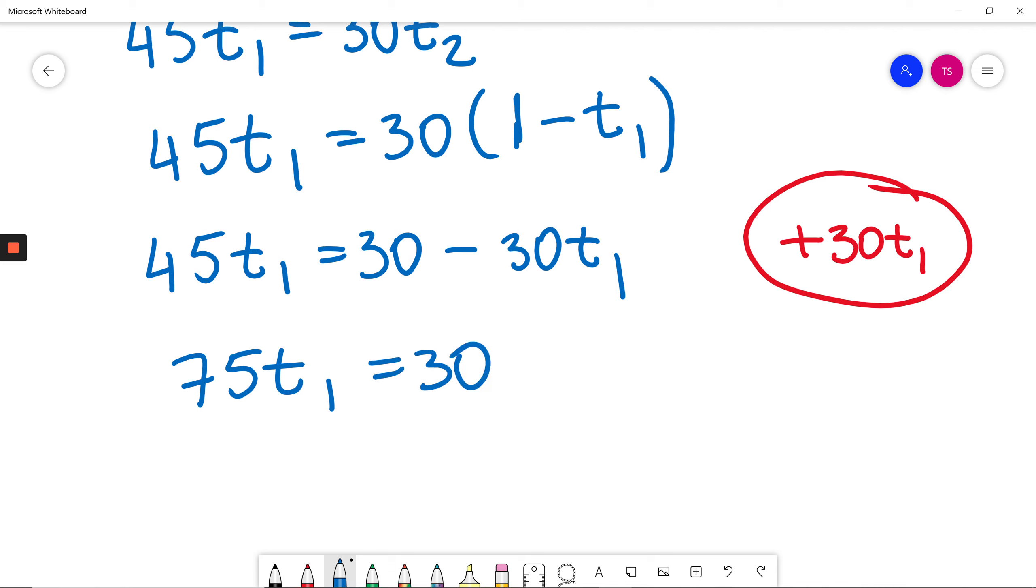and I will get 75 T1 will be equal to 30. At this moment, I will divide both sides by 75, so T1 will be equal to 30 divided by 75. I will simplify by 5. How many fives in 30? 6. How many fives in 75? 15. And I will still simplify by 3. 6 divided by 3 will be 2, and 15 divided by 3 will be 5.